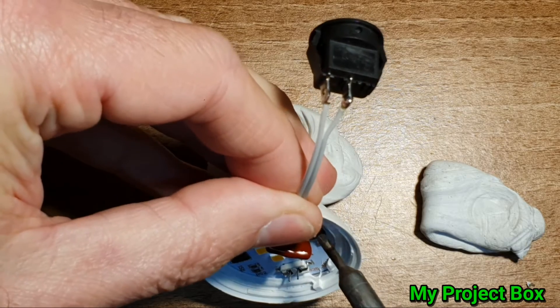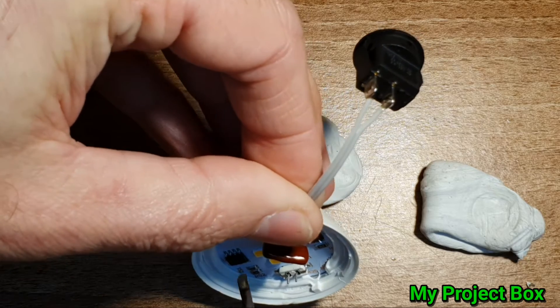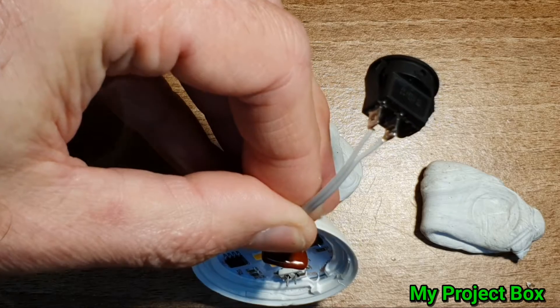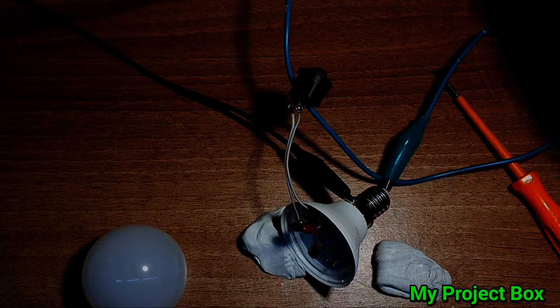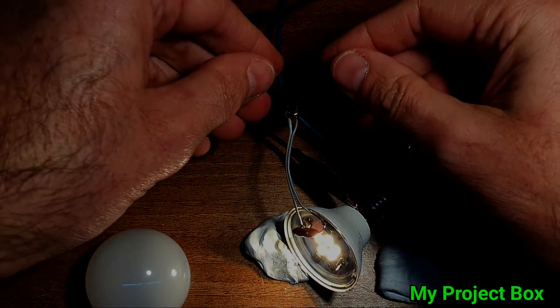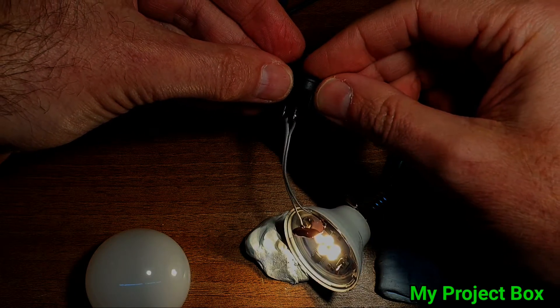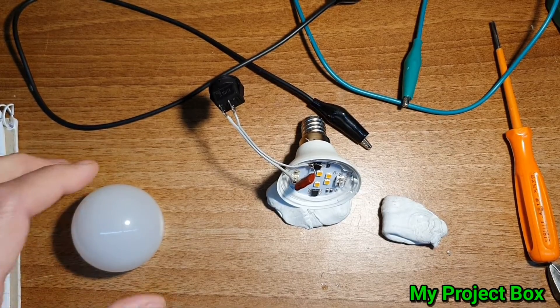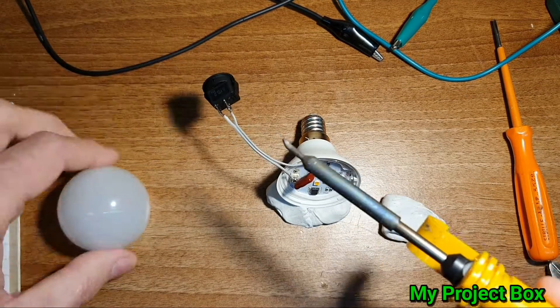Right, so full brightness and dim mode. Now of course I need to unsolder the switch because that's just the way it is. I have to plug the wires through this hole.